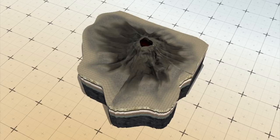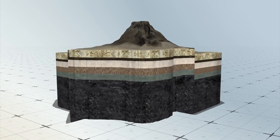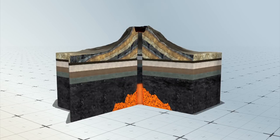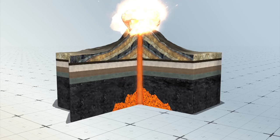Cinder cone volcanoes occur when lava is ejected from a volcanic vent. Lava is shot into the air and pieces accumulate around the vent. This creates a circular or oval-shaped cone with a bowl-shaped crater at the top.